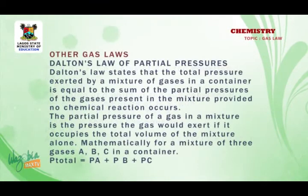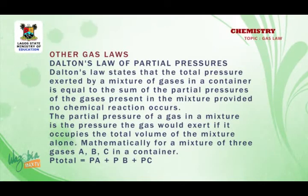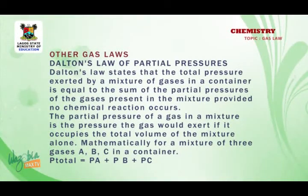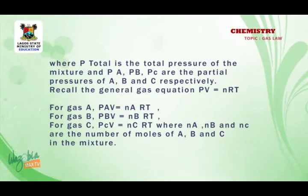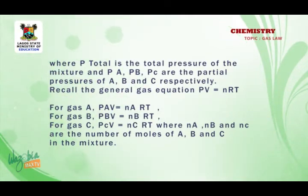Dalton's law of partial pressure states that the total pressure exerted by a mixture of gases in a container is equal to the sum of the partial pressures of the gases present in the mixture, provided no chemical reaction occurs. The partial pressure of a gas in a mixture is the pressure the gas would exert if it occupied the total volume of the mixture alone. Mathematically, for a mixture of three gases A, B, and C in a container, P total equals PA plus PB plus PC, where P total is the total pressure of the mixture and PA, PB, PC are the partial pressures of A, B, and C respectively. This is related to the general gas equation PV equals NRT.